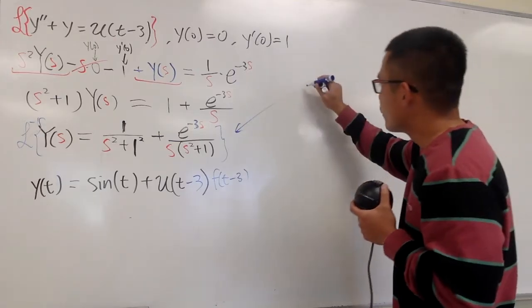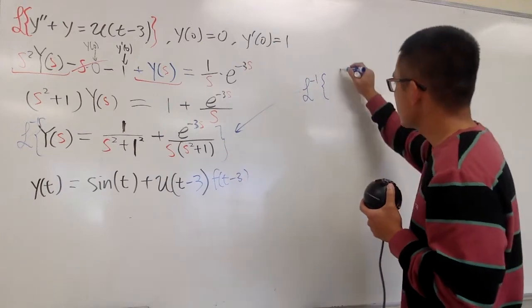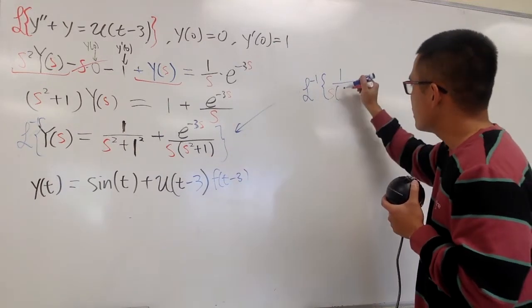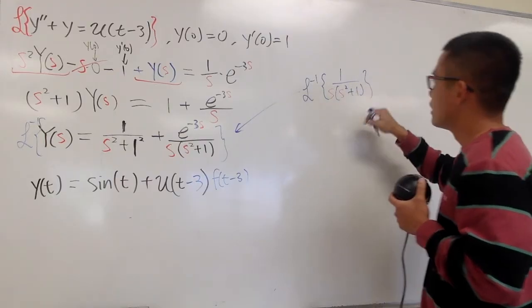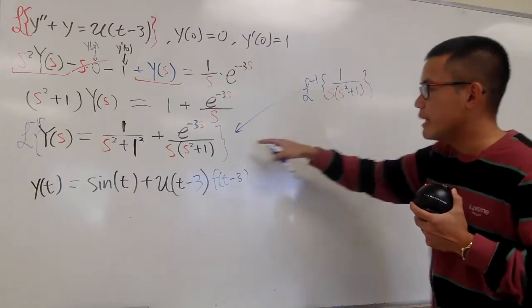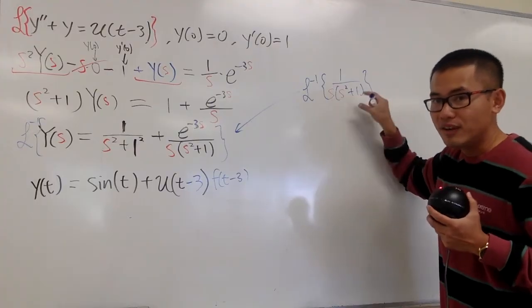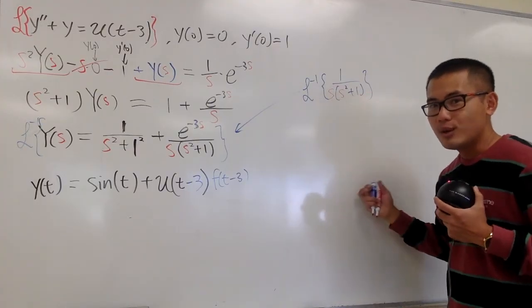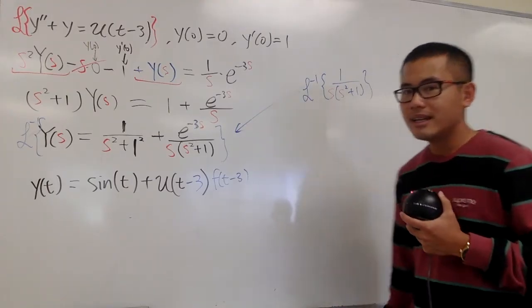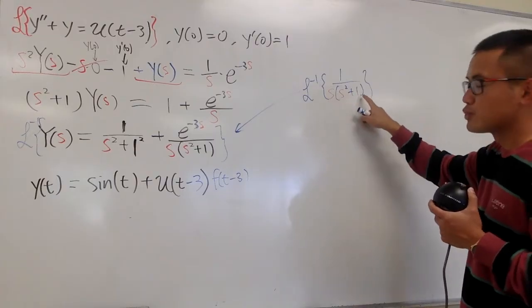I have to figure out what's the inverse Laplace of 1 over S times S squared plus 1. When you do this only, you see on the top, I did not put down E to the negative 3S anymore, because this right here, by itself, it's going to give us F of T. And once I know F of T, I can just plug in T minus 3 into T, and then I will figure out this part. So anyway, this is 1 over S times S squared plus 1. To do this, we have to do partial fractions.